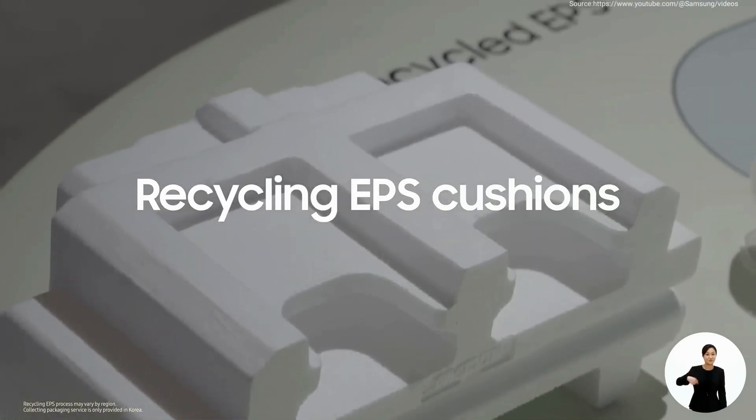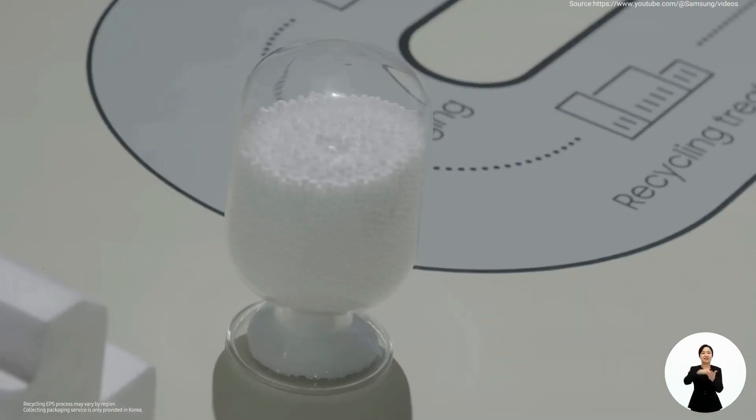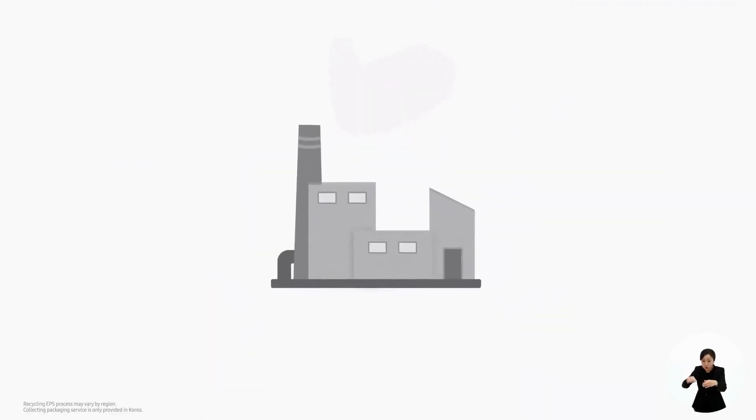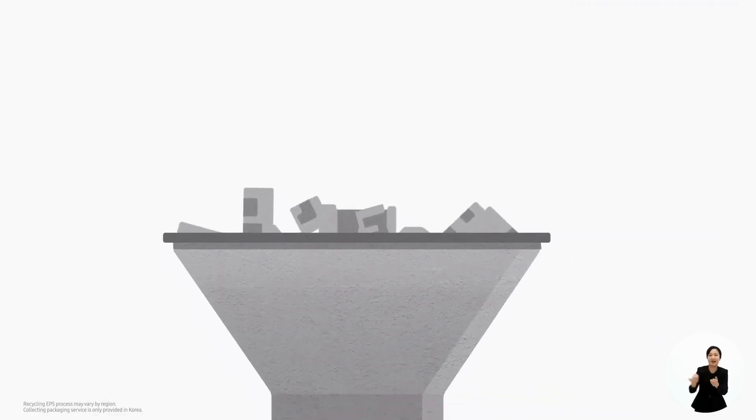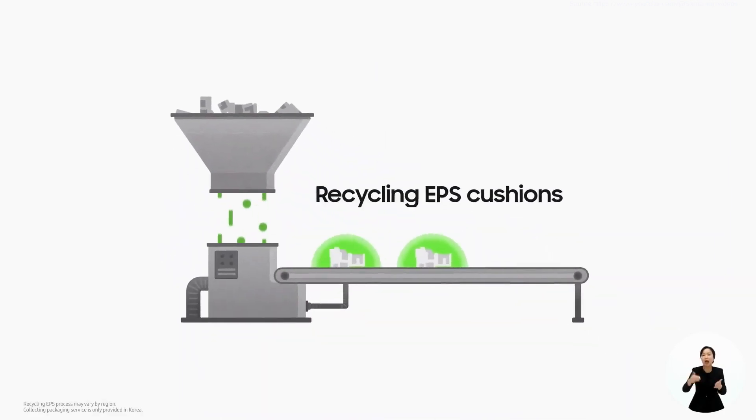First, we recycle our EPS cushions. These are the plastic styrofoam pieces that protect our products. We make sure to bring them back to the facilities and use them to make new EPS cushions. We are committed to creating more of these circular solutions.